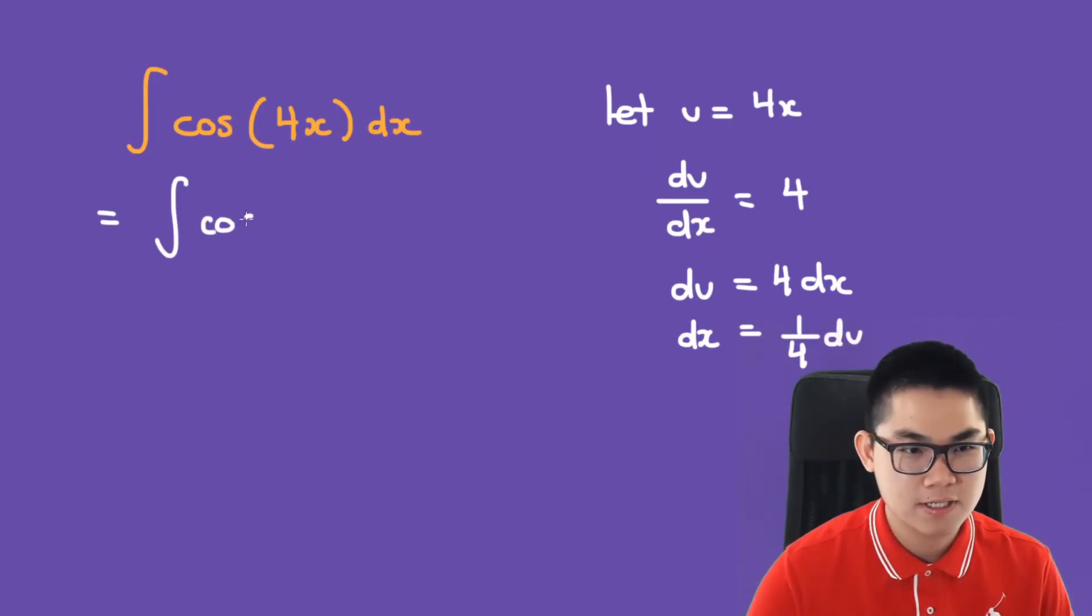Our integral will be cosine of u. And dx is 1 over 4 times du.